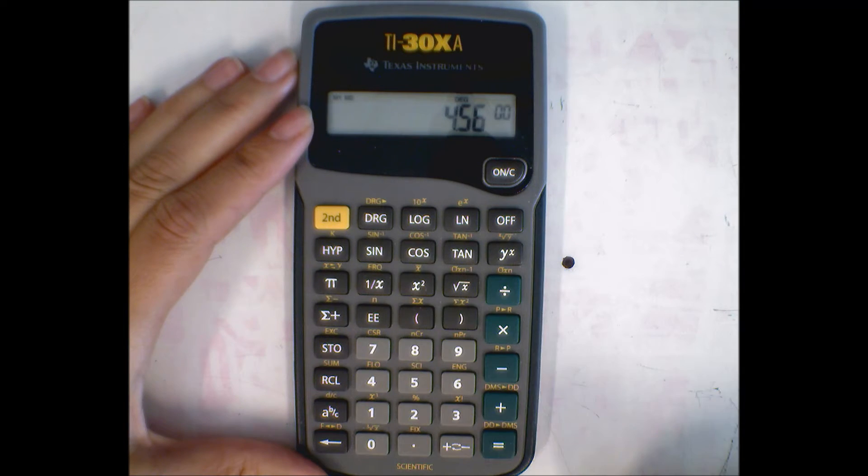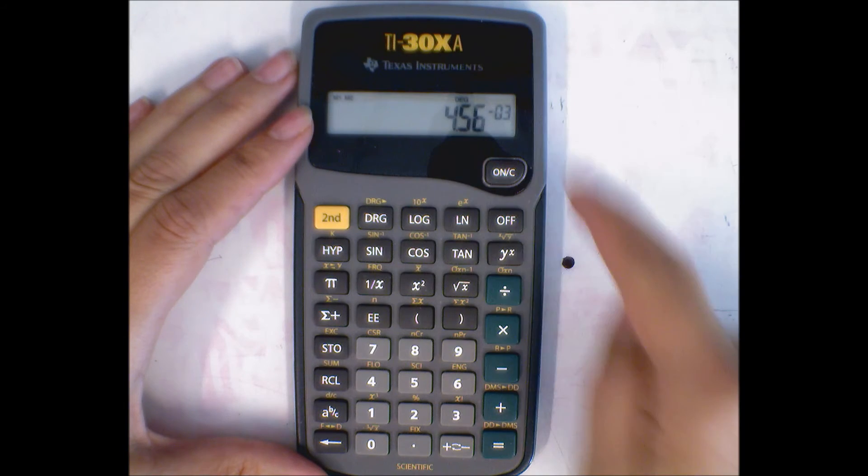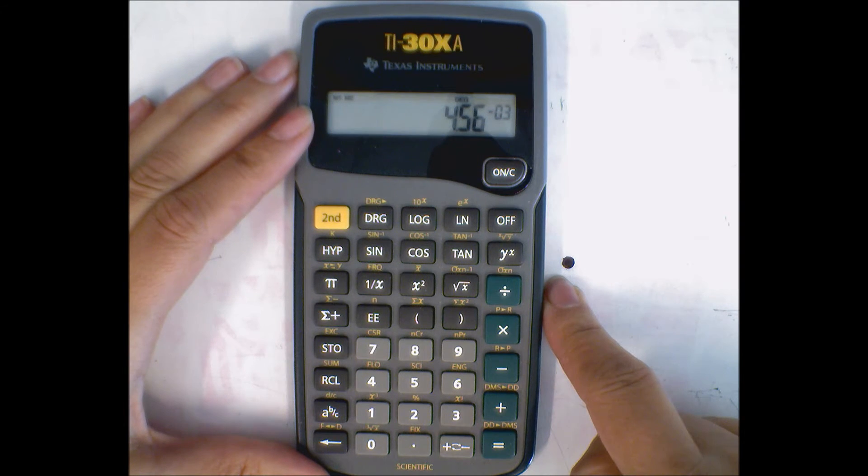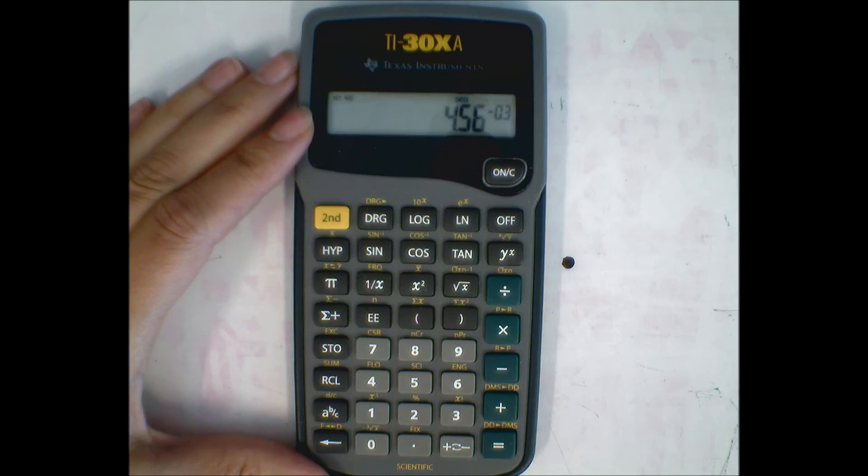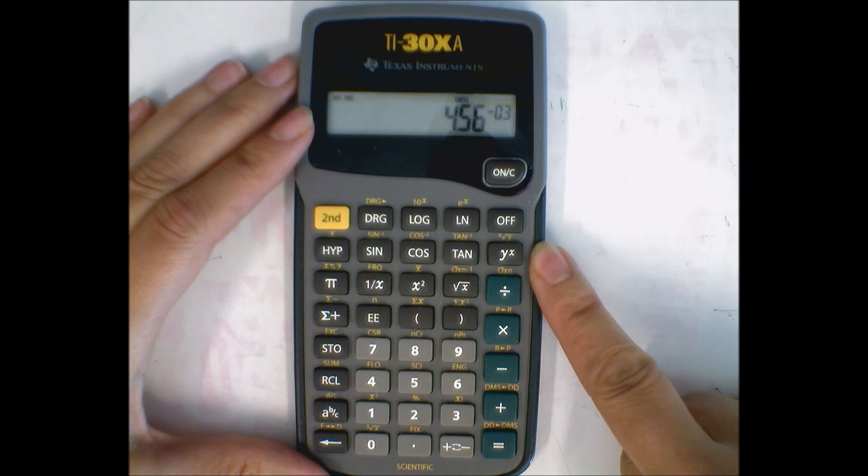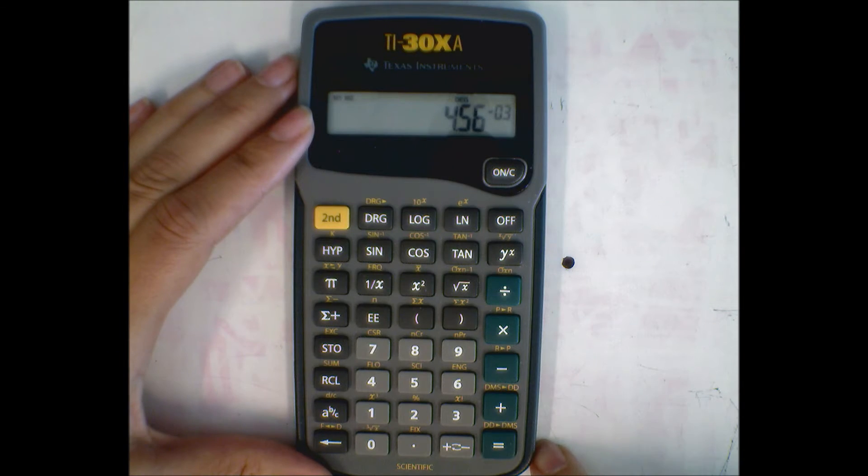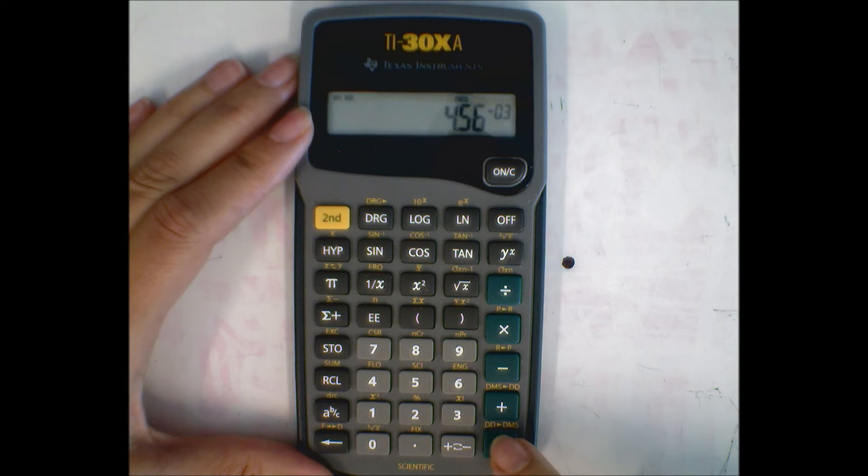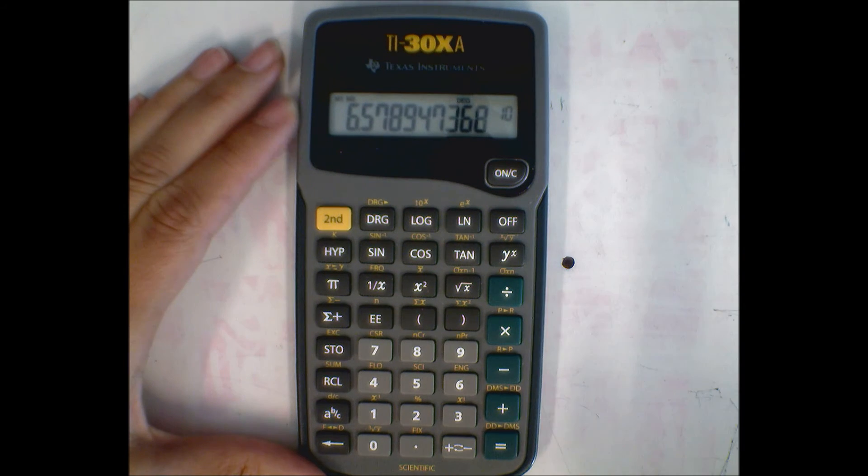EE 3, and then use this button here for the negative sign. Don't use the minus, use that, and it put a little negative sign in front of that exponent. So now I've entered 4.56 times 10 to the negative 3. Remember, no times sign, no y to the x, nothing like that. Now I'm ready to find out what this answer is and I hit equals.